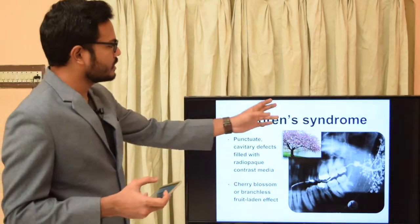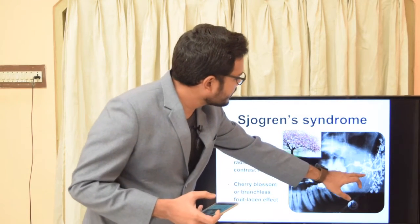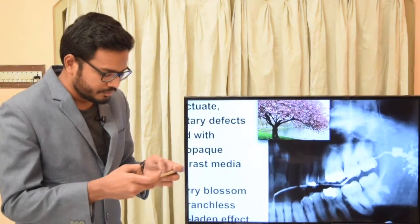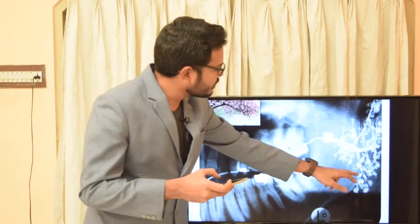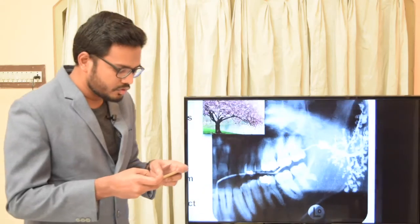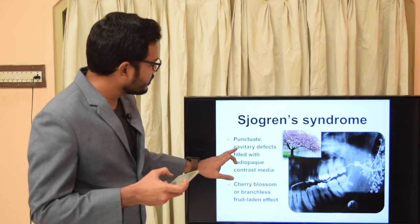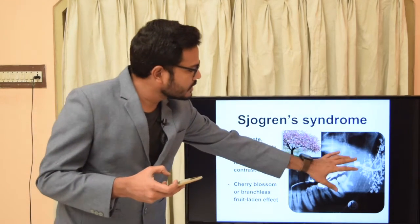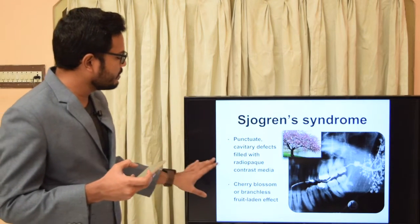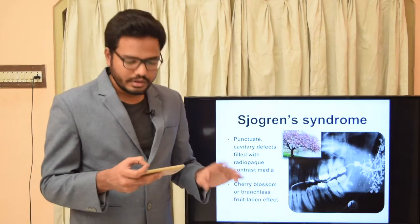Starting with Sjögren's syndrome — this is a sialogram of Sjögren's syndrome where you can see punctate cavitary defects filled with radiopaque contrast media. This is called cherry blossom appearance, because it resembles a cherry blossom tree. We have various punctate cavitary defects within the salivary gland filled with contrast media, giving the appearance called cherry blossom or branchless fruit-laden tree. These terms are very important from an entrance exam point of view.